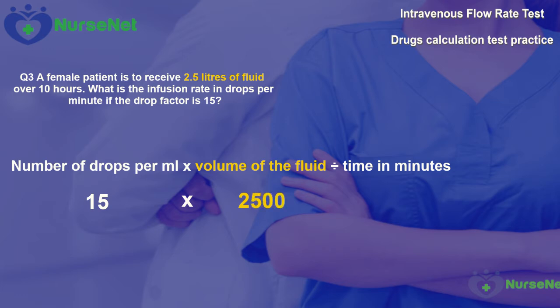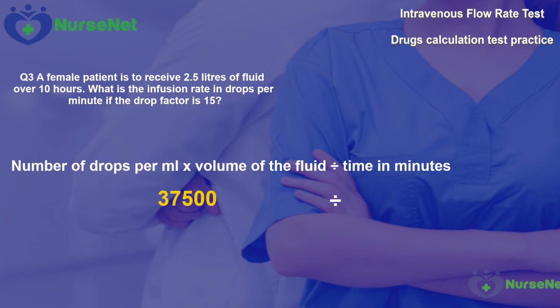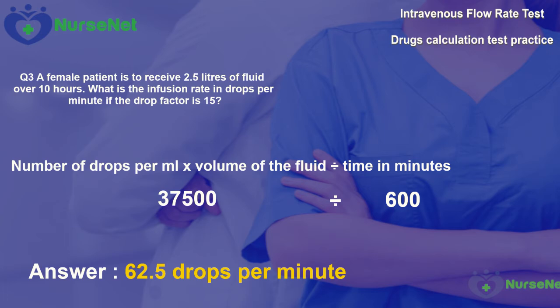Multiplying 2,500 millilitres by 15 gives us 37,500. Now we divide by the time in minutes. We've been given 10 hours, and 10 multiplied by 60 gives us 600 minutes. So, 37,500 divided by 600 gives us 62.5 drops per minute. Rounding to the nearest whole number gives us the answer of 63 drops per minute.